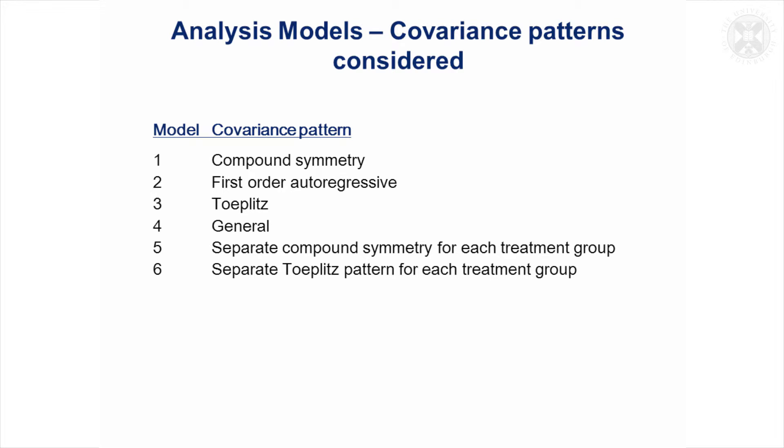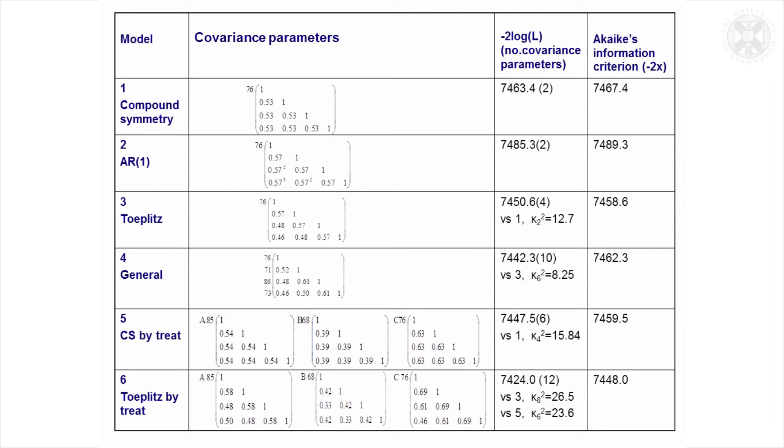First of all, before looking at the results for the fixed effects, we'll consider a range of different covariance patterns. These ones are probably more useful if we look at the results because you probably can't remember what each of these structures are. This table shows the covariance matrix that was obtained for each of the structures. The next column—this is from SAS—gives us minus twice the log likelihood, and we can use that to do the likelihood ratio tests to see which of the more complex models are a significant improvement. In brackets here I've got the number of covariance parameters fitted in each of the models.